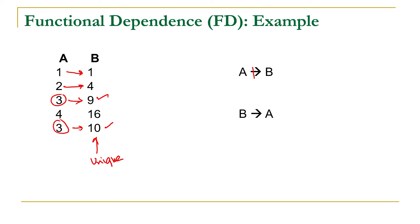While B is functionally determining A. From this discussion we can conclude that if we have unique values of X, then it will functionally determine Y. But if we have repeated values of X, then we have to check for each of its values that it should have only one value of the corresponding attribute.